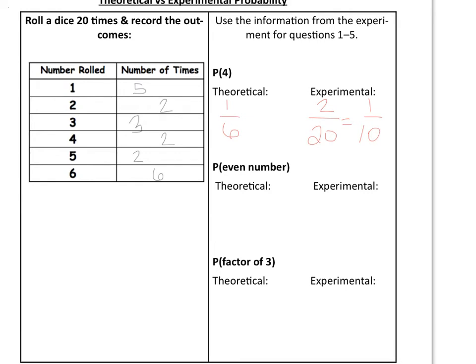For even numbers, we know that the even numbers are two, four, and six — that's three out of six numbers that are even, which is one-half. Looking at our experimental results, we have two twos, two fours, and six sixes — that's ten even numbers out of twenty rolled. So we have ten out of twenty, which equals one-half. In this case, they were exactly the same.